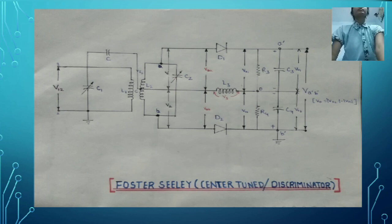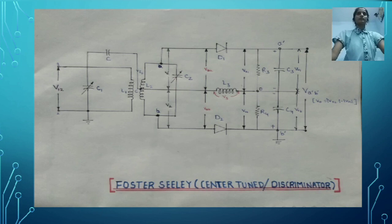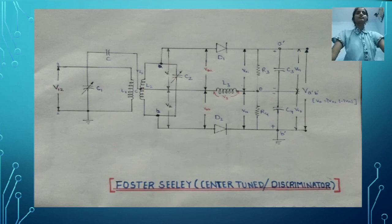Let us see what happens at resonance. At the resonance condition, the inductive reactance of the circuit becomes equal to the capacitive reactance, and the circuit becomes purely resistive. The secondary and primary circuits both become purely resistive. Through a resistive circuit, voltage and current are in the same phase. Hence, the secondary current IS and the primary voltage V12 — which produces the secondary current — are in the same phase.